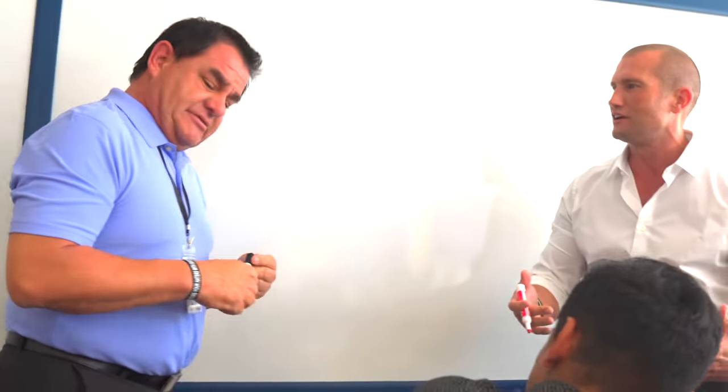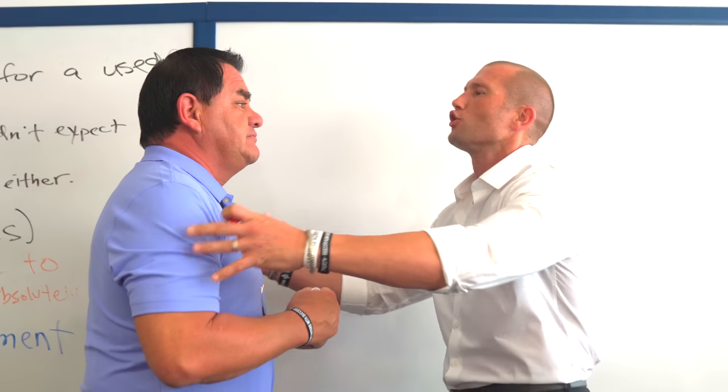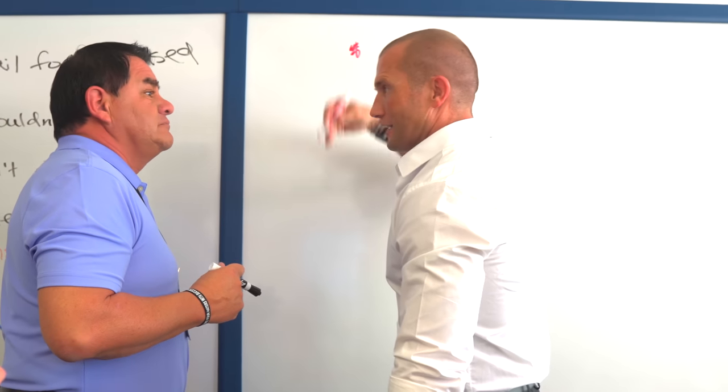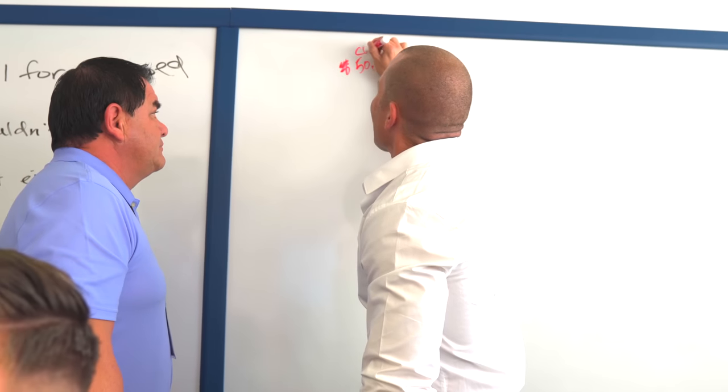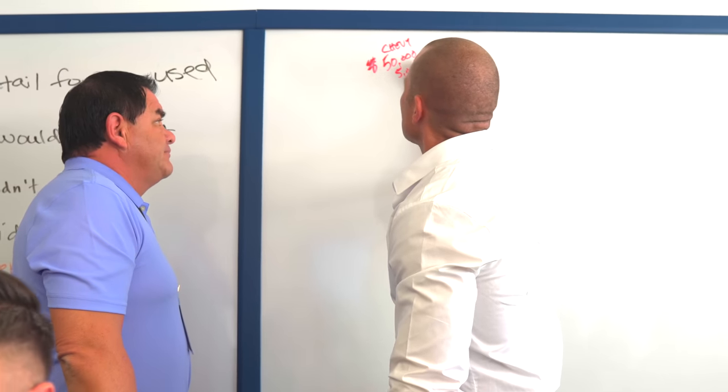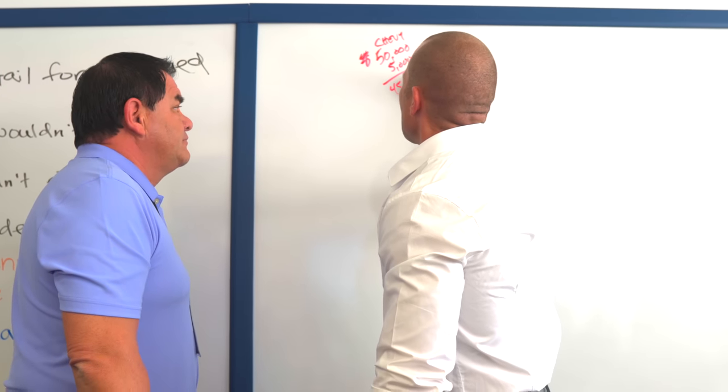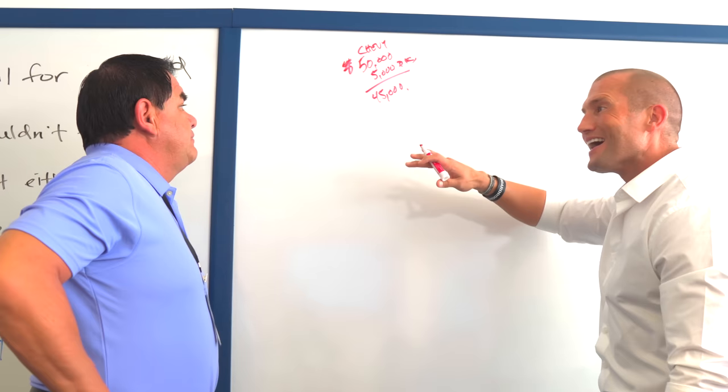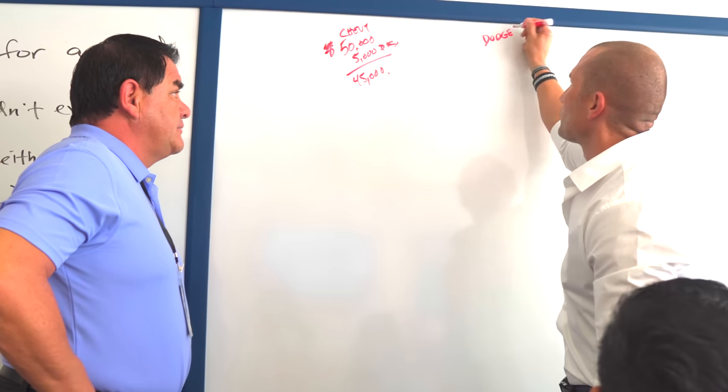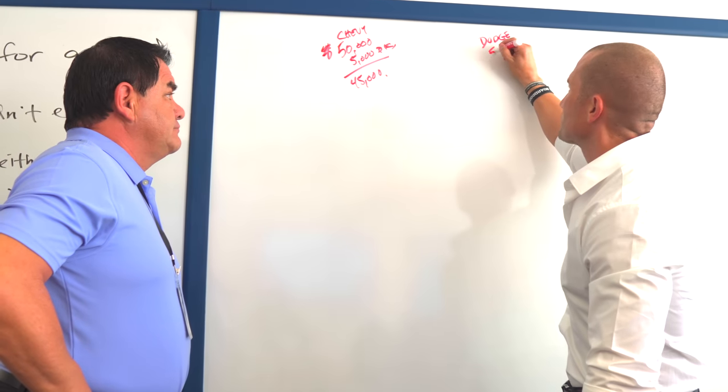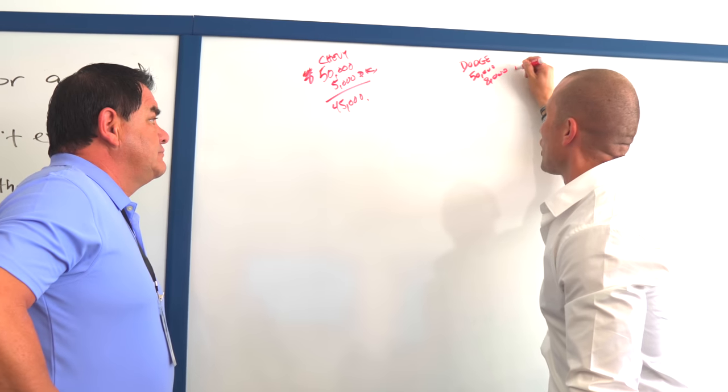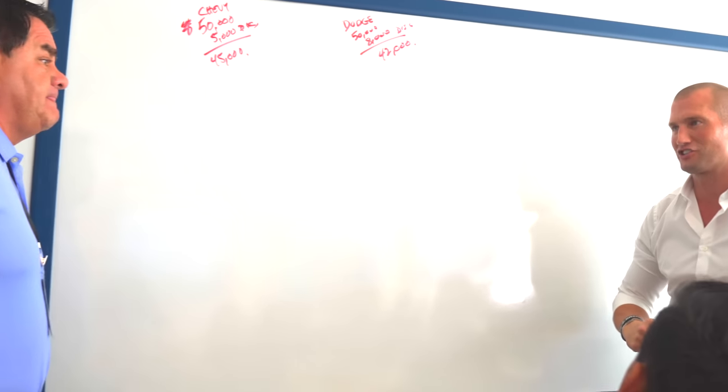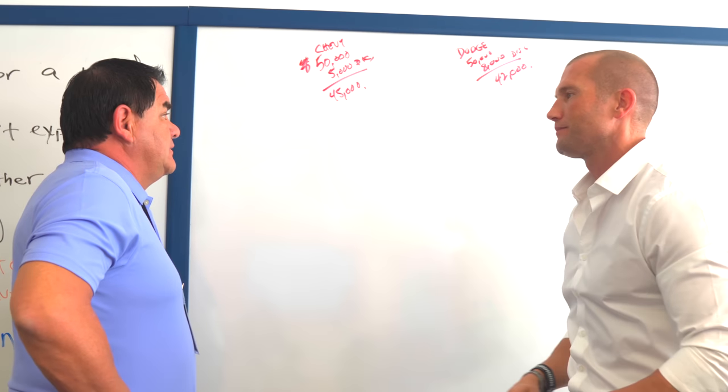34-year veteran, my man, takes on Andy Elliott on a price objection. Are you ready? I guess so. All right, Jesse, you sell Chevys and Dodges. Yes, sir. All right, cool. This is the deal for you. I'm going to give you the ultimate test right now, okay? And you've got to close me on this. All right, Jesse's looking at a new truck because I'm your customer.